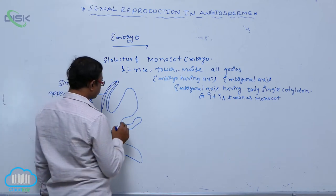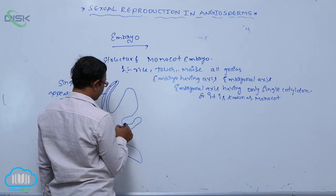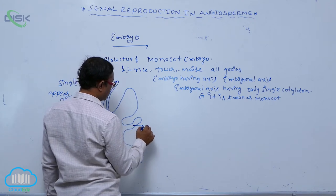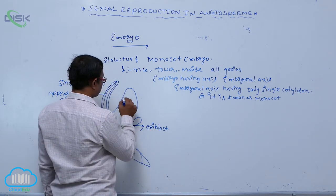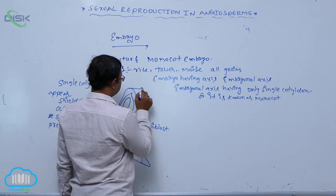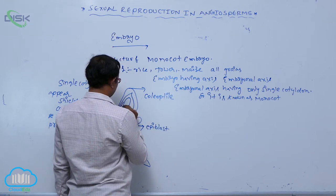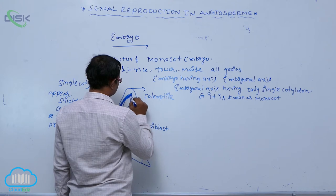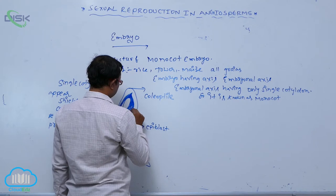After that, the embryo has an embryonal axis. The upper part of the embryonal axis is known as the epiblast. Above that is a hard sheath-like structure known as the coleoptile, which covers the shoot tip and leaf primordia.